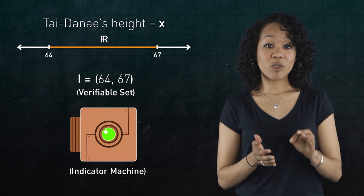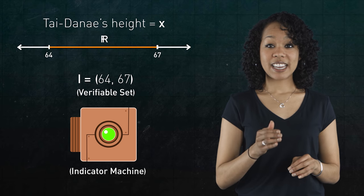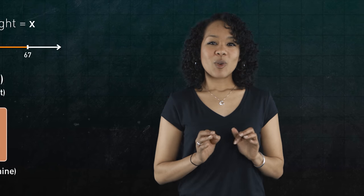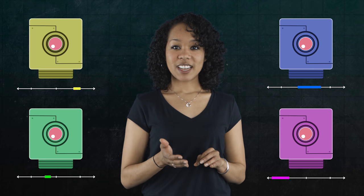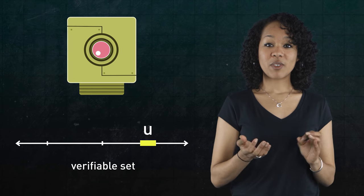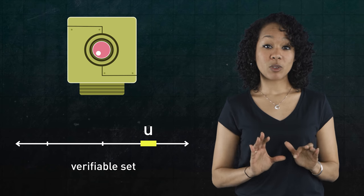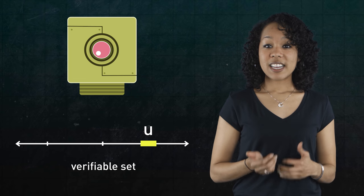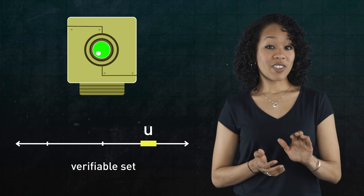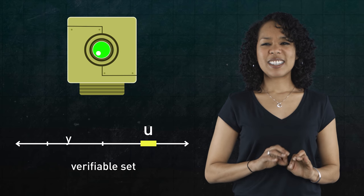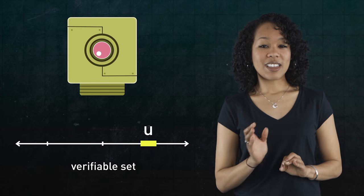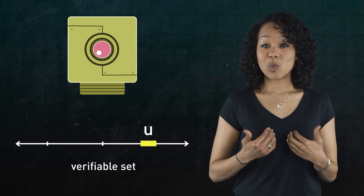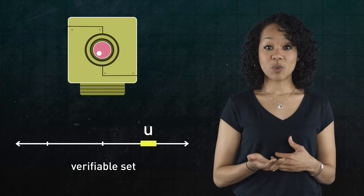It's precisely the set of all real numbers that cause its indicator machine to terminate. Now what happens if there are a bunch of machines where each one is tuned in to a different set? Let's also call these sets verifiable if the same property holds. A set u is verifiable if it has an indicator machine that terminates when you input a number that is in u, and it runs indefinitely when you input a number that's not in u. In other words, we can verify when a number is an element of u. All right, here's where it gets interesting.